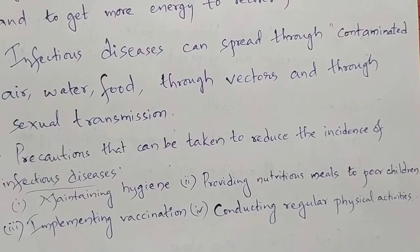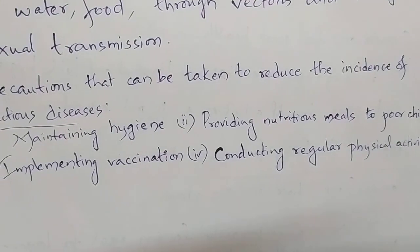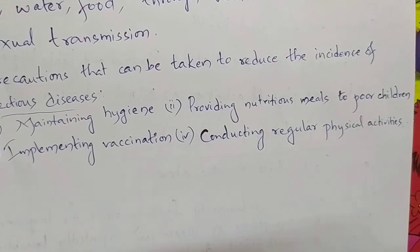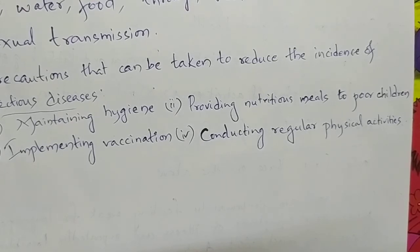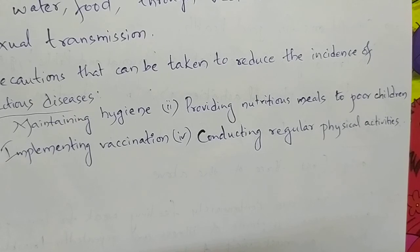What precautions can you take in your school to reduce the incidence of infectious diseases? Precautions include maintaining hygiene, providing nutritious meals to poor children, implementing vaccination programs, and conducting regular physical activities. And what is immunization? Making a person's body immune or protected from diseases — either by passive immunization in critical situations or, in normal conditions, by active immunization called vaccination.